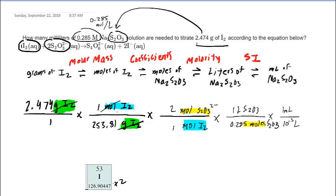So looking at all of our units, the moles of iodine will cancel out in blue. The moles of our target substance will cancel out in yellow. And then the liters of our target substance will cancel out. And that's going to leave us with milliliters.